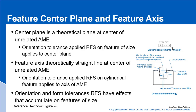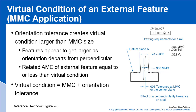Now looking at an RFS condition — we are not applying the MMC modifier, in which case we deal with the feature center plane and feature axis. The center plane is a theoretical plane at the center of an unrelated actual mating envelope. The orientation tolerance applied RFS on a feature of size applies to the center plane. The size must be within specified limits, and the orientation tolerance of 6 must apply regardless of feature size. This is a lot more complex than what we discussed with MMC.